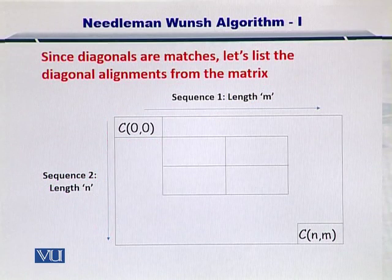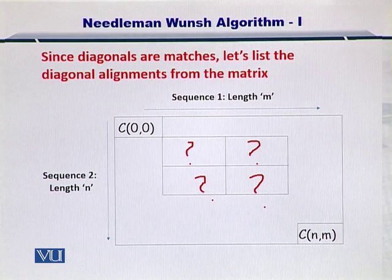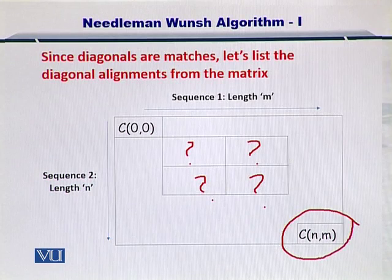The length M of the first sequence is written here on top, and the length N for sequence number 2 is written on the left side. Next, we would like to compute the scores for each one of these four positions. And here at the bottom, you will have the matrix position NM.